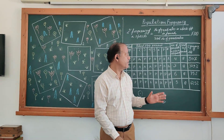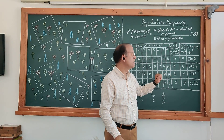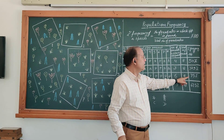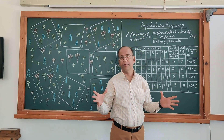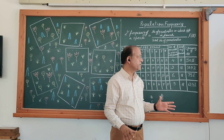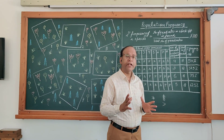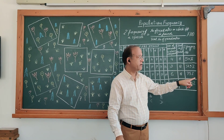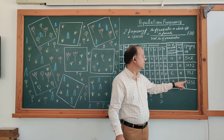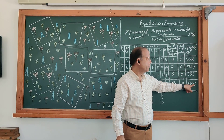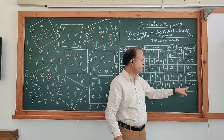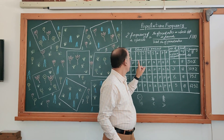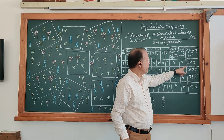Here we can conclude that species C is the most widely distributed species, because its percent frequency is the highest at 75 percent.